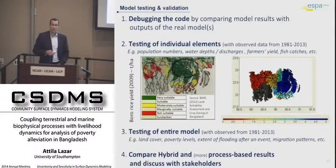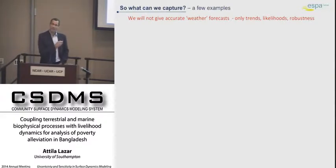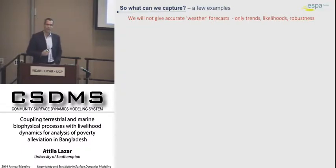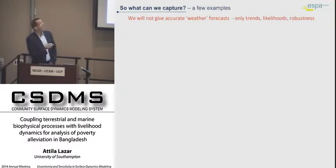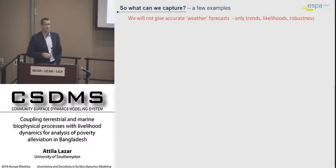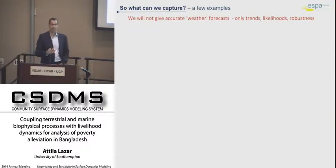Why do we do this? This last slide just gives an indication of the questions we would like to answer and assess with this integrative tool. To remind you — with this integrative tool, we are not aiming for 100% accurate, two-to-three decimal precision results. We are aiming just to give trends, likelihoods, and robustness of different changes and different governance decisions on the different elements of the system.